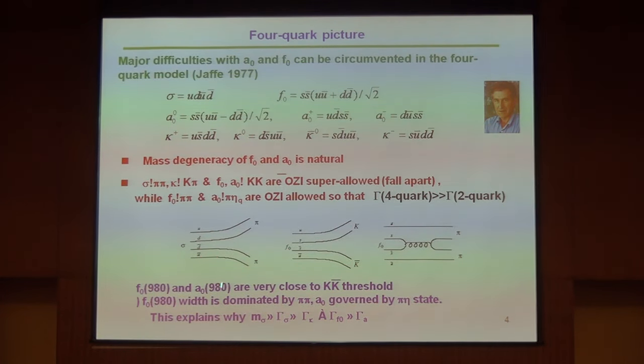Also for the decay widths, you can see the decay of sigma to ππ, kappa to Kπ, and also η₀ and a₀ to KK̄ are OZI-super-allowed because they don't need gluon exchange—you can have four-quark decay.